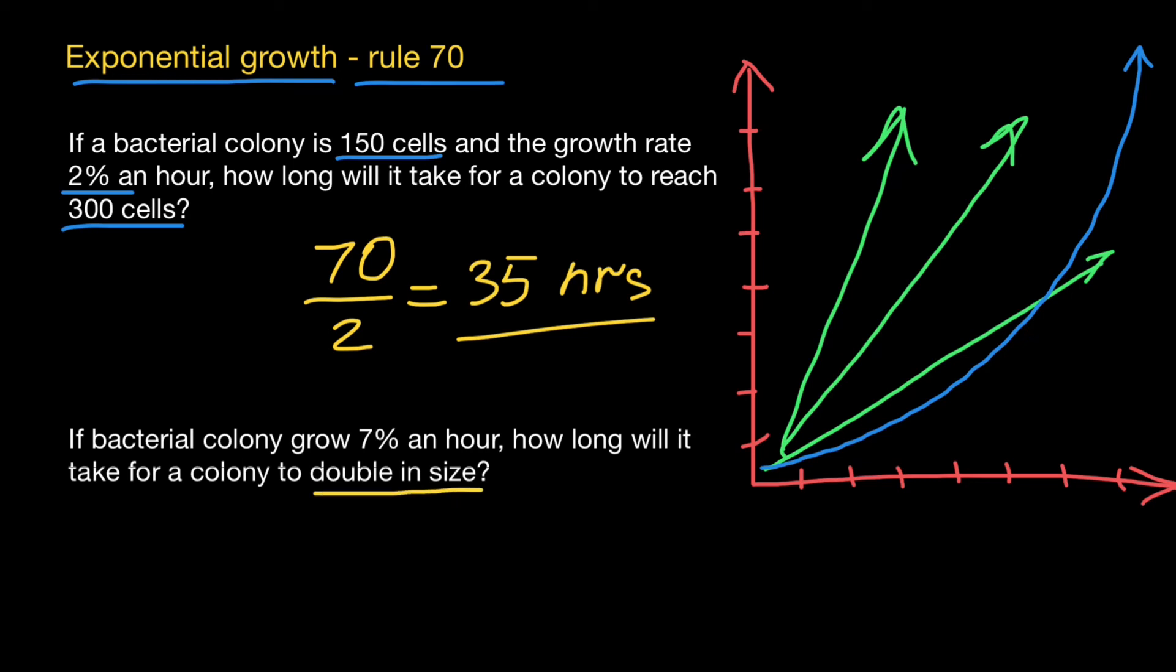So we can start with any number. For example, 1 million bacteria, and how long it's going to take for this colony with a growth rate 7% to double in size. The answer is going to be very simple.